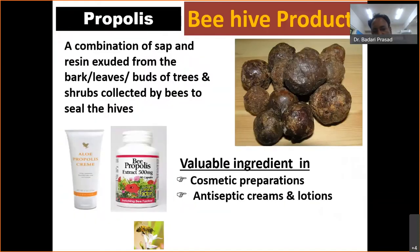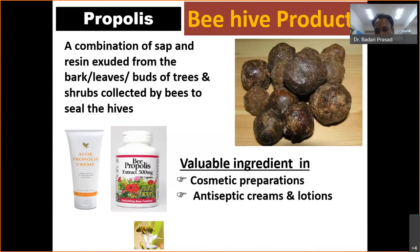Another important product of apiculture is propolis — a sap and resin exuded from the bark or leaves of trees, which bees collect. Propolis acts as a sealant for the hive; wherever there are cracks and crevices in the hive, bees seal them with this propolis. It is also used in construction of nests and is a very hard product. Propolis is used in preparation of cosmetics, antiseptic creams, and lotions. The product is available in the market at around 78,000 rupees per kg.